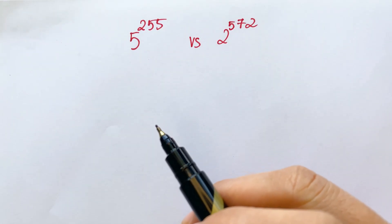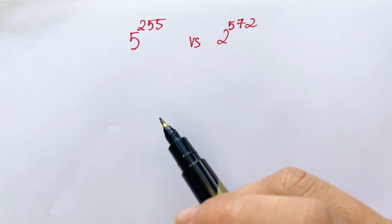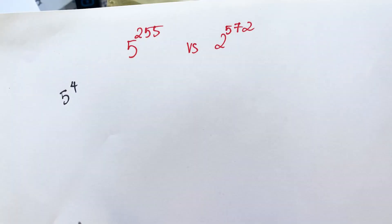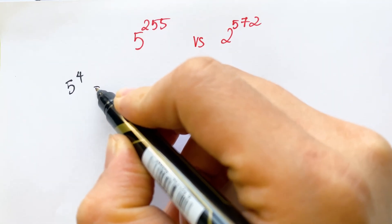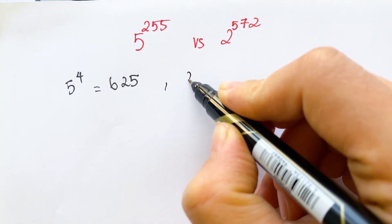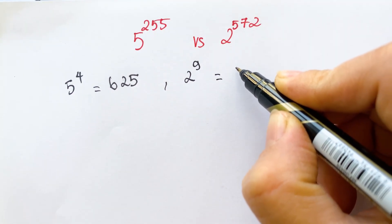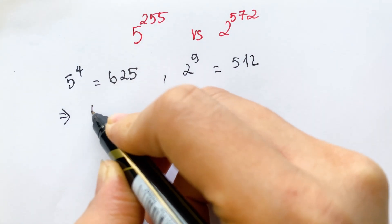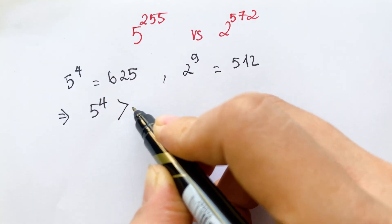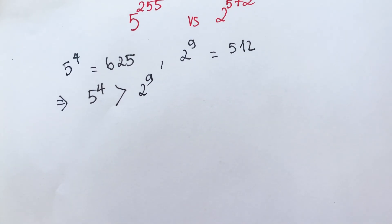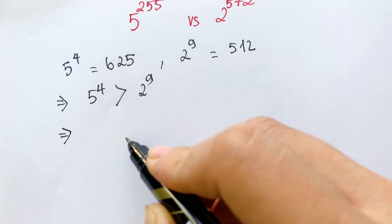Hello, how to compare the exponential expression with different base. We have 5 power 4, which equals 625, and 2 power 9, which equals 512. So it's easy to see that 5 power 4 is greater than 2 power 9.